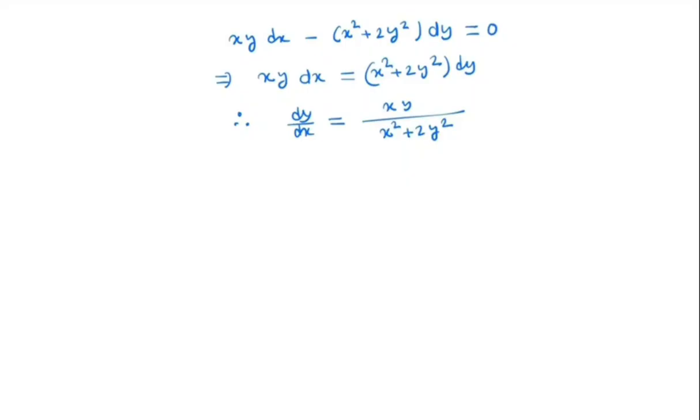So this kind of equation we solve by transforming the variable y equals vx. So we get dy by dx equals v plus x dv dx. We put here dy by dx equals v plus x dv dx equals x.